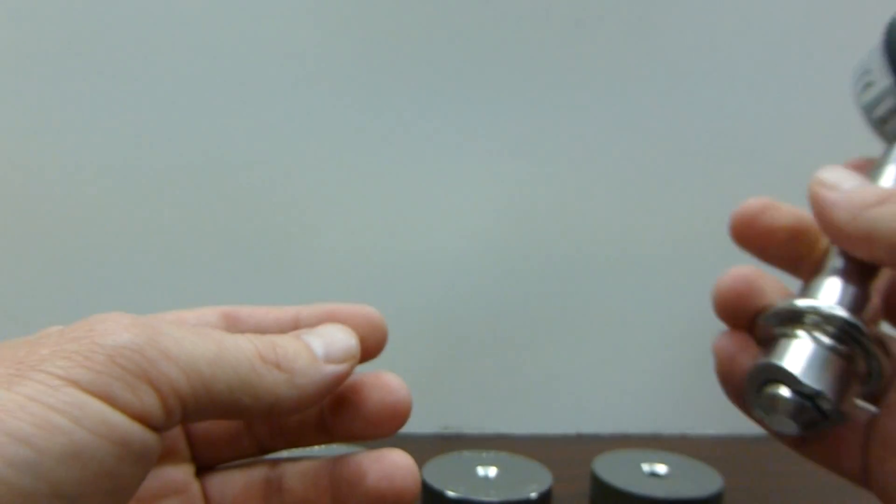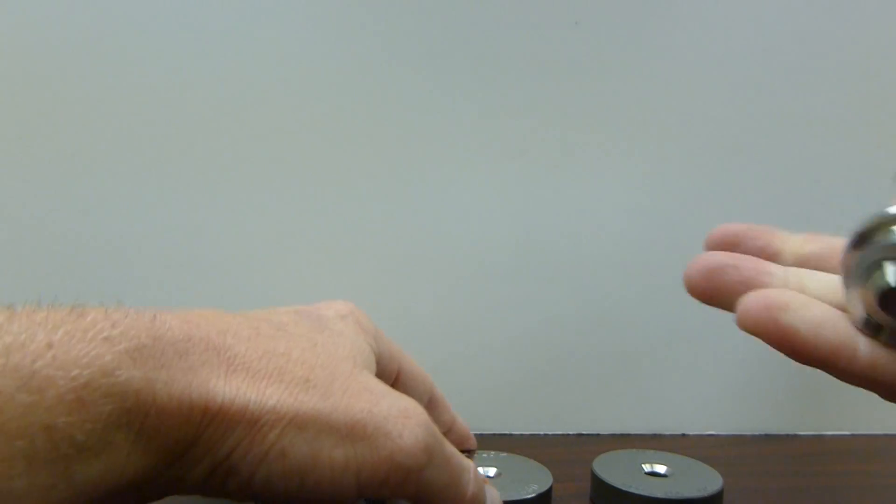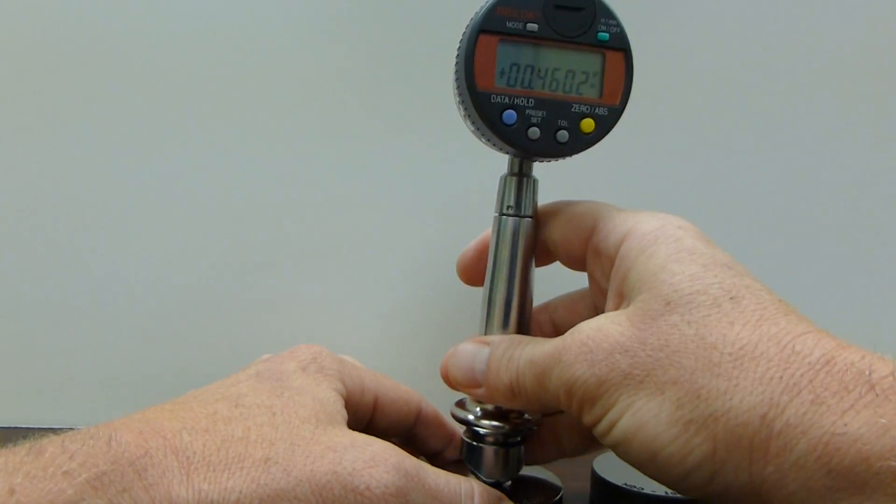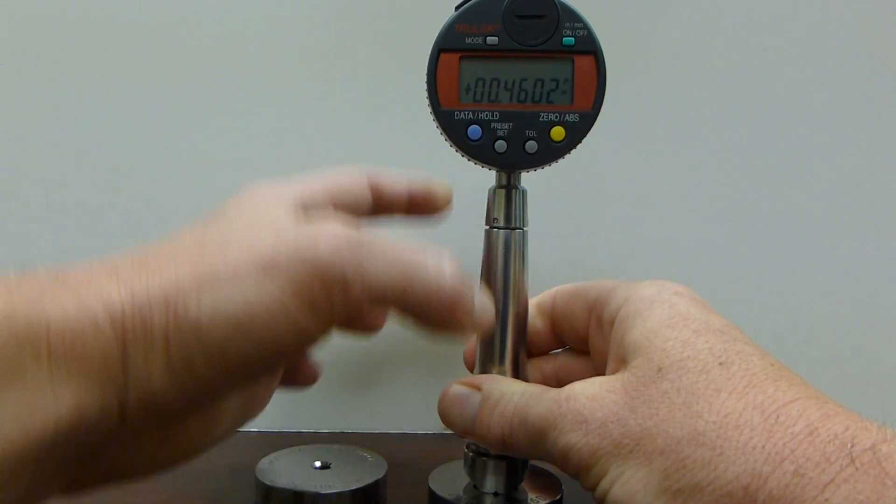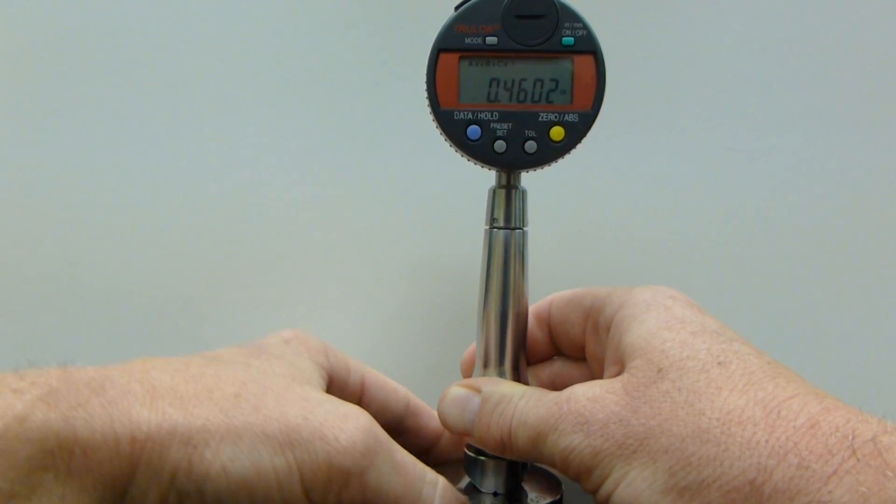The first step is to calibrate the gauge to the given calibration set block. I know that this DO100-460 is in fact 460 and two tenths of an inch. I will hit the preset button to preset the gauge to the block.